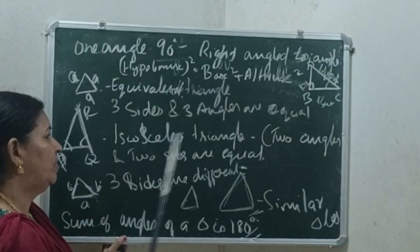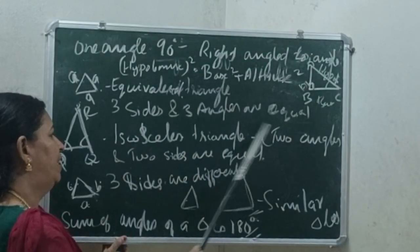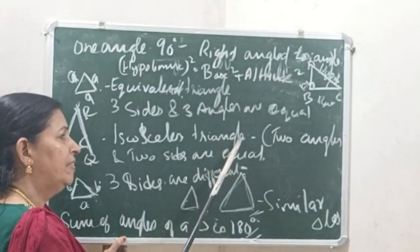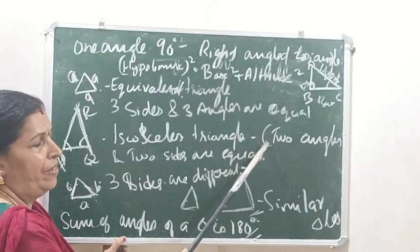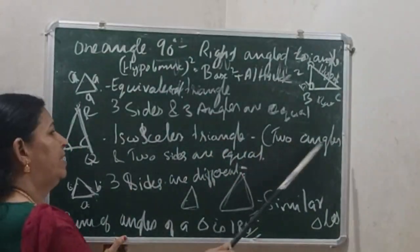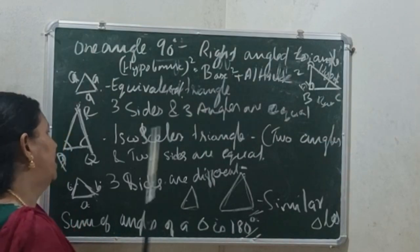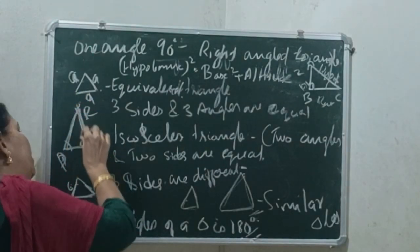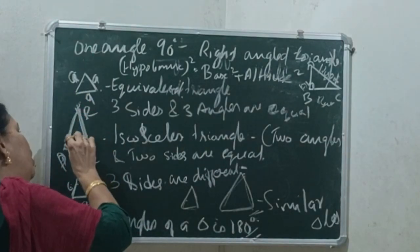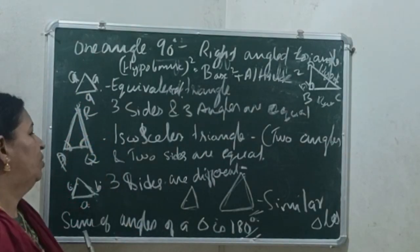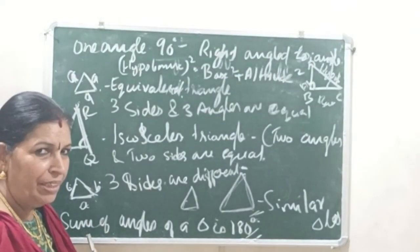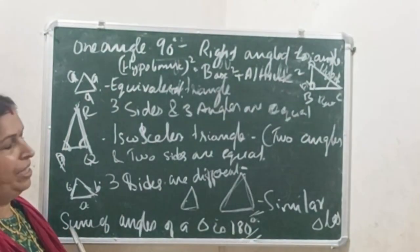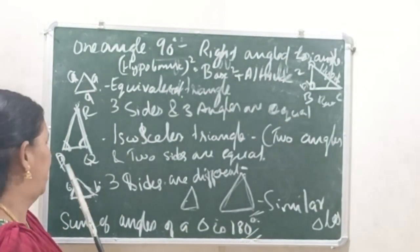From this isosceles triangle, two sides are equal and two angles at the base corners are the same. Both corners of the triangle are equal.